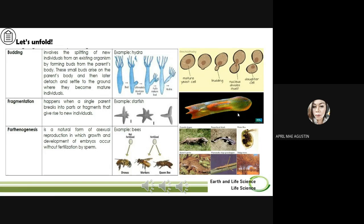Another type of asexual reproduction is fragmentation. Fragmentation as a method of reproduction is seen in organisms such as filamentous cyanobacteria, molds, lichens, sponges, acoel flatworms, some annelid worms, and sea stars. Fragmentation happens when a single parent breaks into parts or fragments that give rise to new individuals. As you can see here in the third column, we have the example of the starfish, and next to it is the picture of an acoel flatworm.